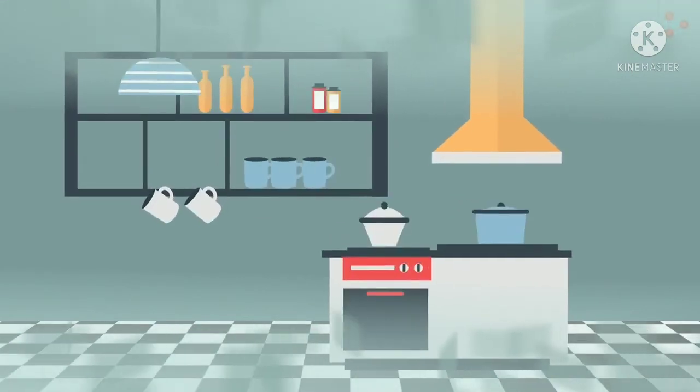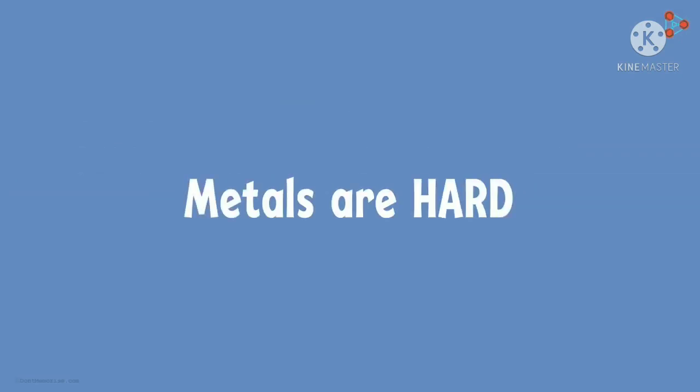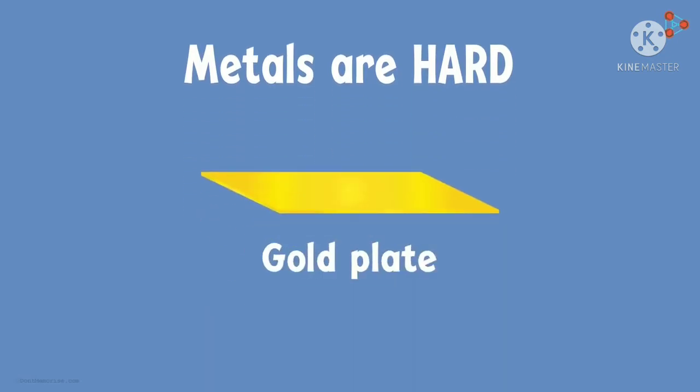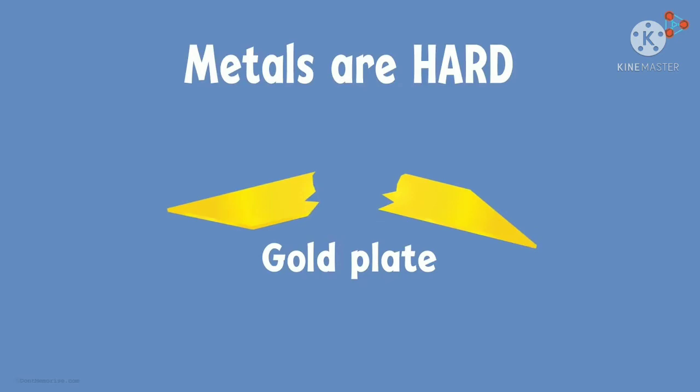Now if the utensil drops on the floor, does it break into parts? No, right? That is because metals are generally hard in nature. However, this hardness varies from metal to metal. A very thin plate of gold, for example, can be easily broken with a little pressure.